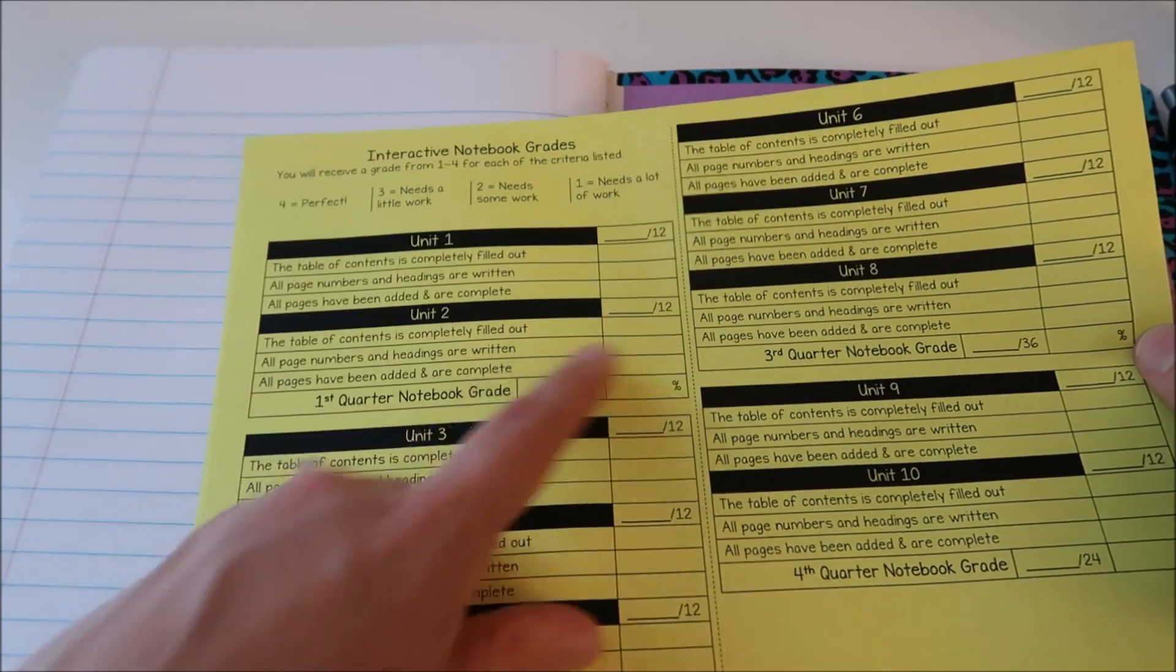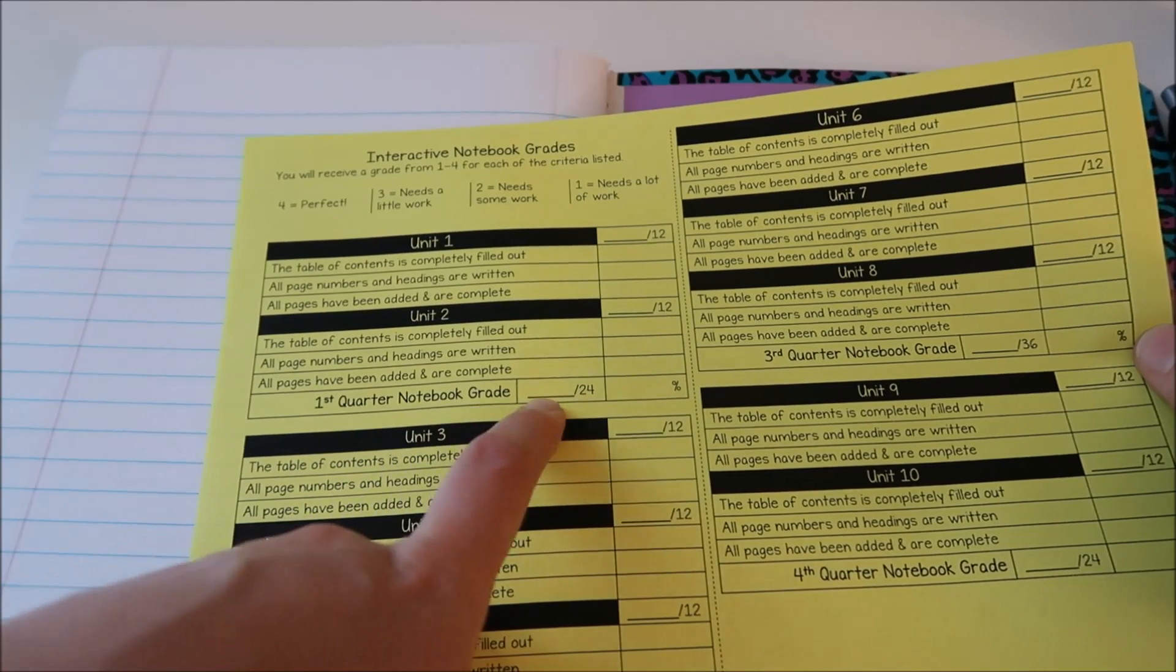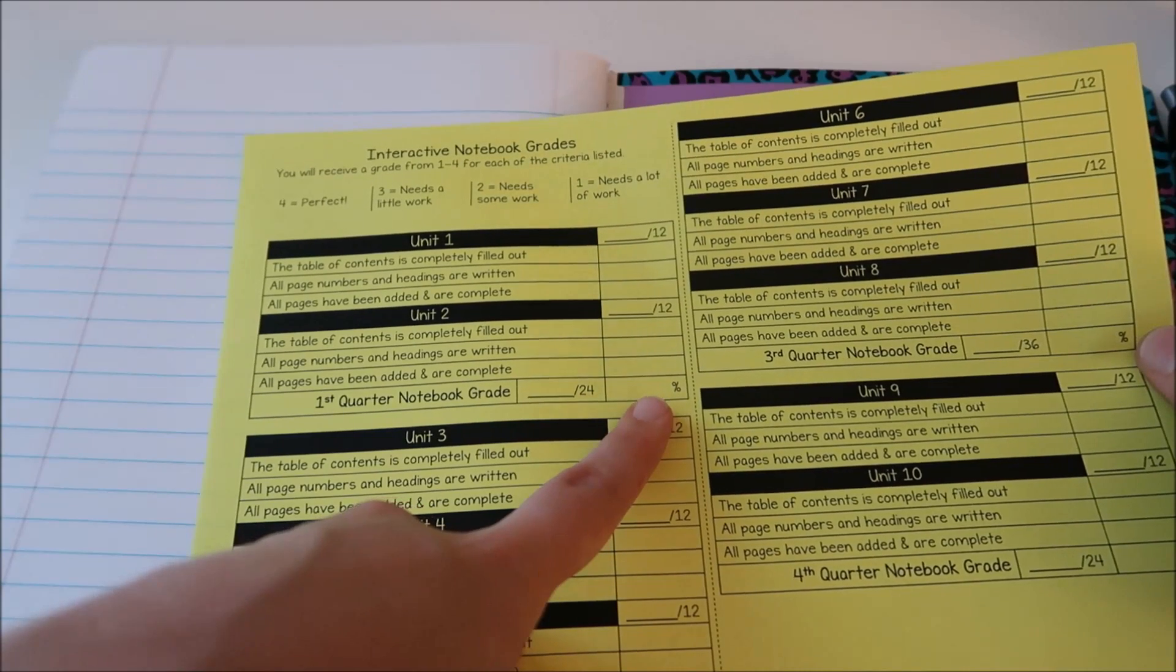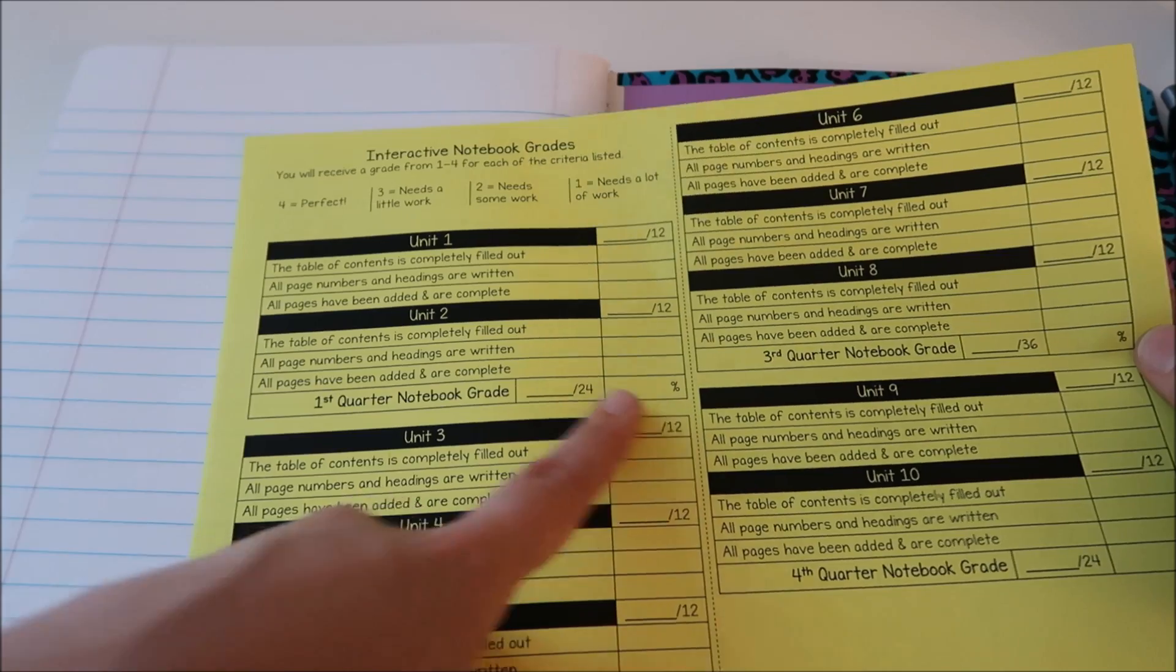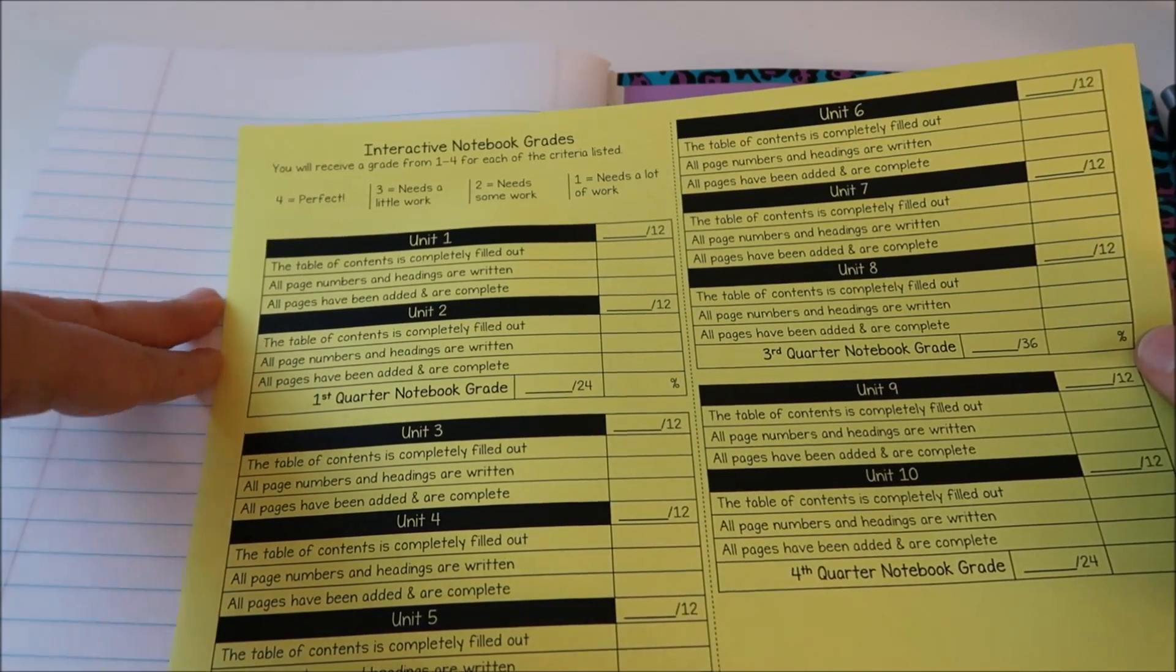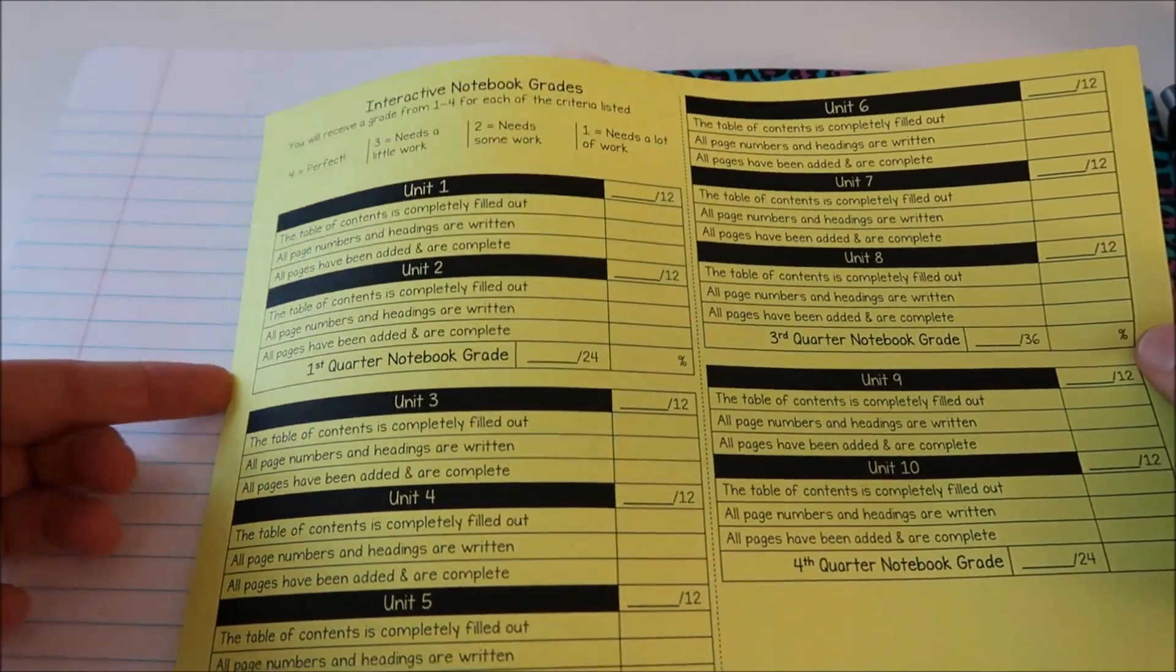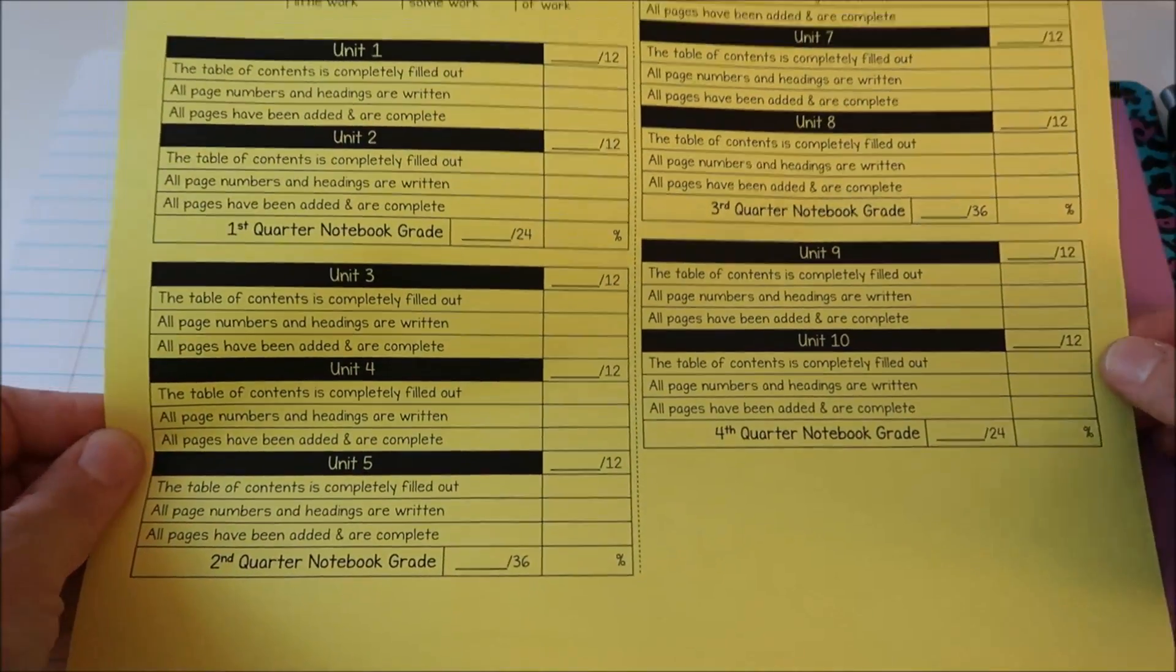So that would total up to 12 points. They'll get a grade out of 12 for unit one, a grade out of 12 for unit two and then that's going to be our entire first quarter. So after the first quarter they'll have a certain number out of 24 and that percentage goes into their grade for the quarter as a quiz. Ideally if they're keeping up with their notebook and doing everything correctly they're going to have an extra 100 averaged into their grade and my students usually appreciate that.